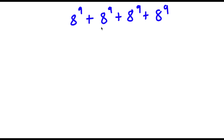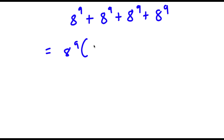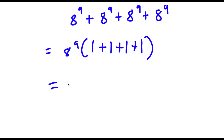Alright, so I have 8 to the power of 9 plus 8 to the power of 9 plus 8 to the power of 9 plus 8 to the power of 9. So now to solve this, I'm going to first start by factoring out 8 to the power of 9. Now 8 to the power of 9 divided by 8 to the power of 9 is simply 1, so I have 1 plus 1 plus 1 plus 1. If I simplify this in parentheses, I get 8 to the power of 9 times 4.